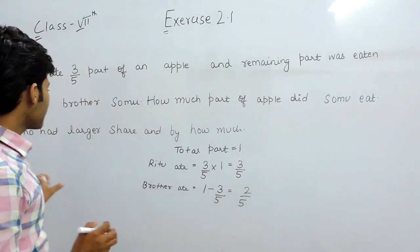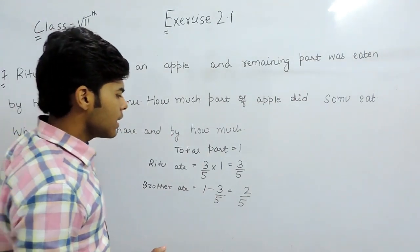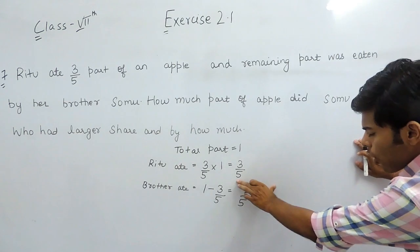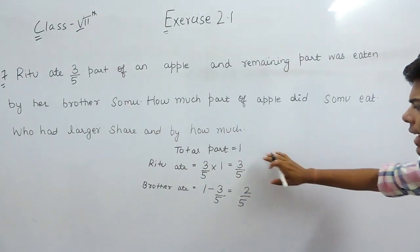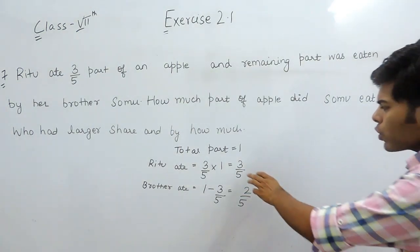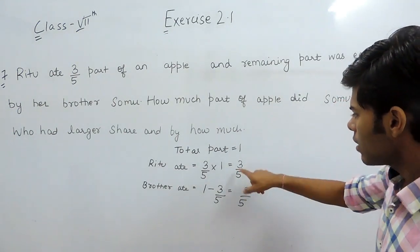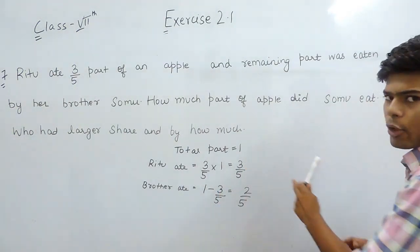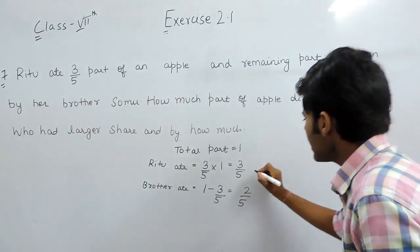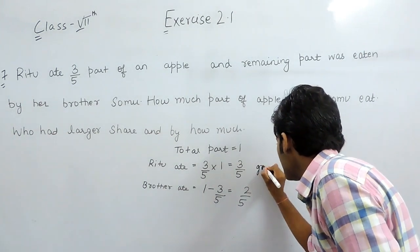Now, the next part is who had the larger share. You can see that the denominators are the same. So we will check the numerator. Whose numerator is greater? Ritu is having a greater numerator, so this means that she had a greater part.